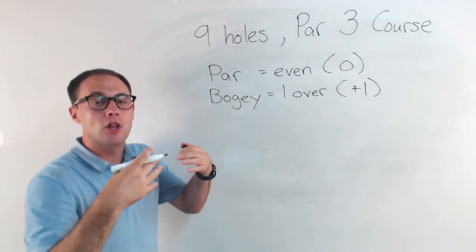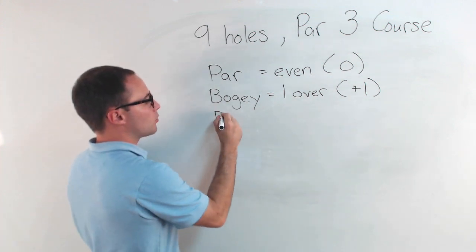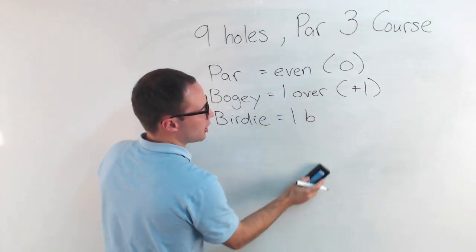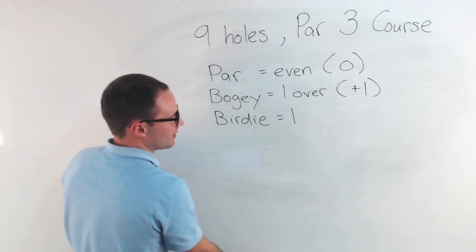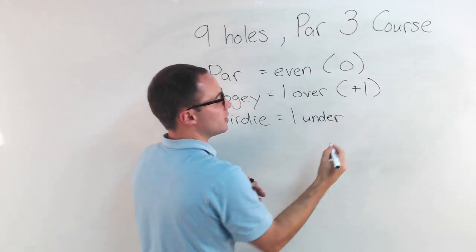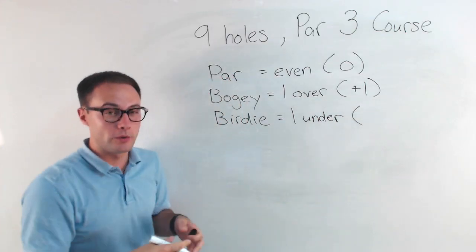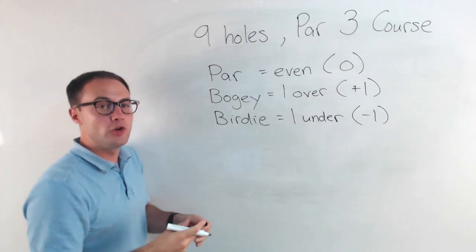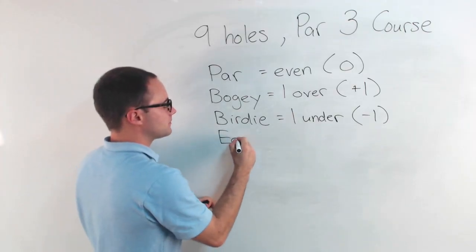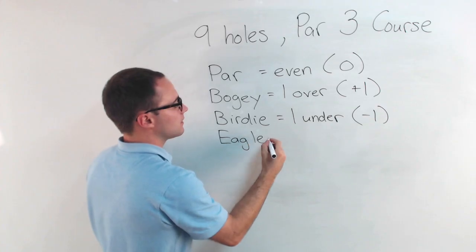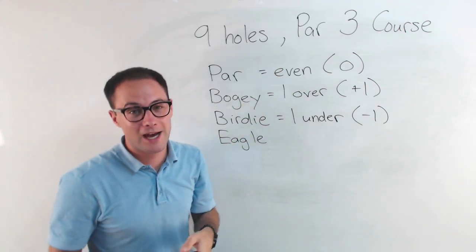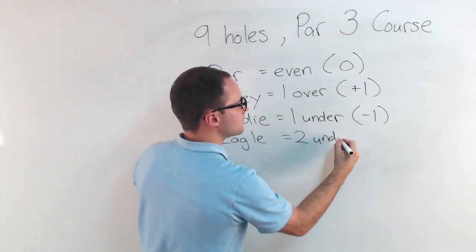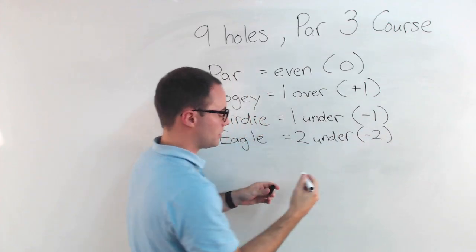If you were below par, one below is called a birdie. In golf, they say one under par, which we would represent as negative one. If you were two under, that's called an eagle. On a par three, that would be a hole-in-one — two under par, represented as negative two.